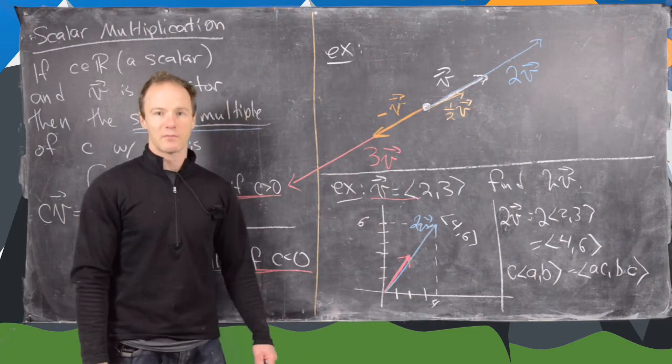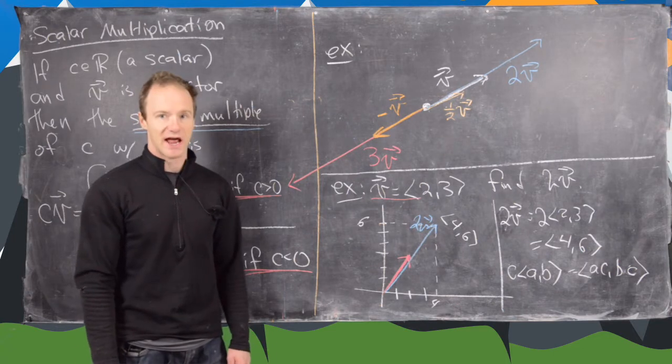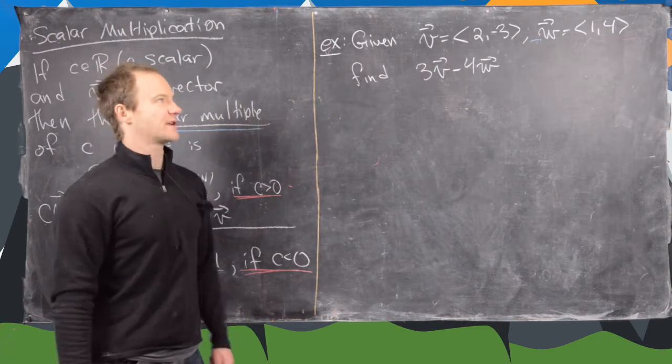Okay, I'll clean up the board and then we'll look at some more examples of combining vectors with scalar multiplication and addition.